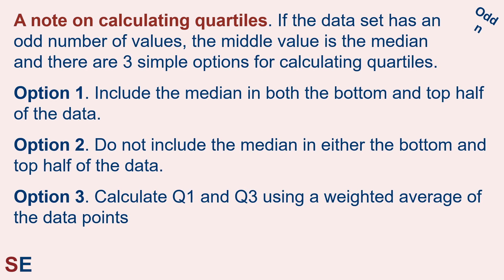Before we proceed, let's look in more detail at calculating quartiles when the data set has an odd number of values. The middle value is the median, and there are actually three different options for calculating the quartiles — it's a bit more complicated than with an even number of values. Option 1: include the median in both the bottom and top half when calculating Q1 and Q3. Option 2: do not include the median in either the bottom or the top half. Option 3: calculate Q1 and Q3 using a weighted average of the data points.